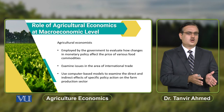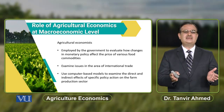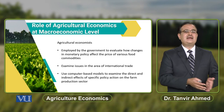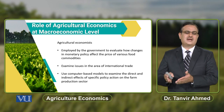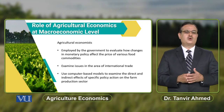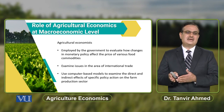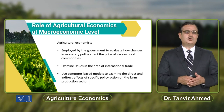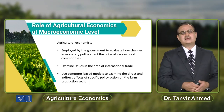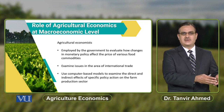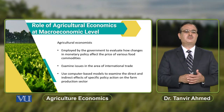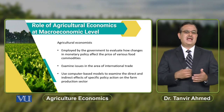Phir isi pattern pe agricultural economist, yahan pe aap issues examine kar sakta hai with reference to international trade. At macroeconomic level, if there is any change in policy, it has some influence on the trade of agricultural commodities in the market. The agricultural economist at macroeconomic level can use computer based models to examine the direct and indirect effects of specific policy actions on the farm production sector — for example, what is the impact of taxes on farm output, and what is the impact of subsidies on farm production sector.